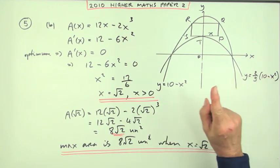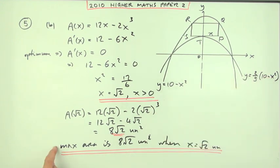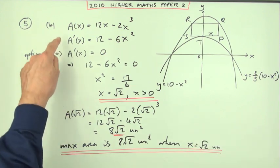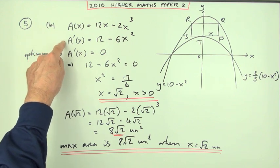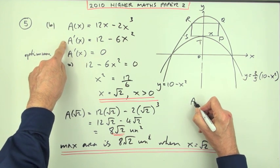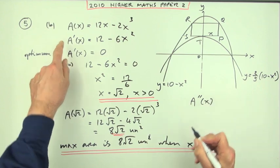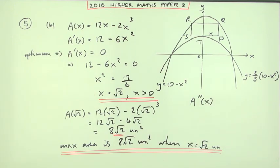Now, an alternative to demonstrating it's a maximum using the nature table would be to use the second derivative. If that's the first derivative, then the second derivative, which just means differentiating again, in other words, finding the rate at which the gradients are changing, would simply be, that's a constant would disappear, would be negative 12x.